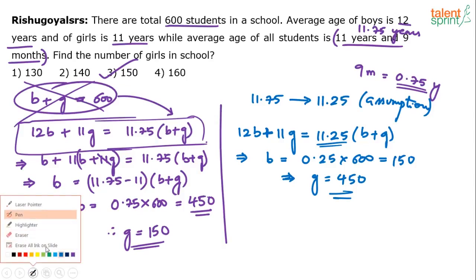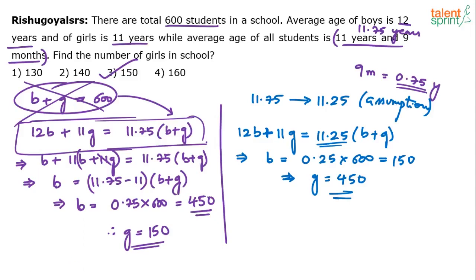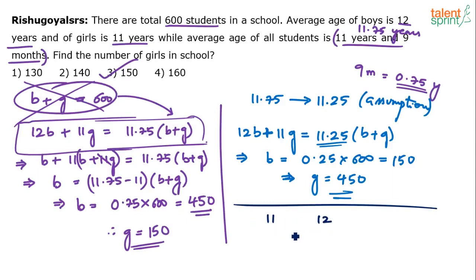Let me explain a smarter approach without putting pen on paper. Average of girls is 11, average of boys is 12, and average of the entire class is 11.75. Is 11.75 closer to the average age of boys or of girls? It is closer to the average age of boys.